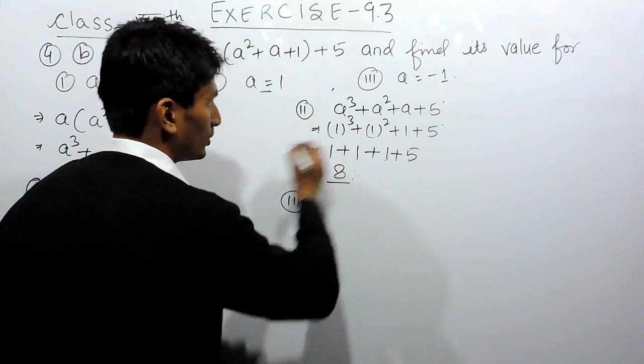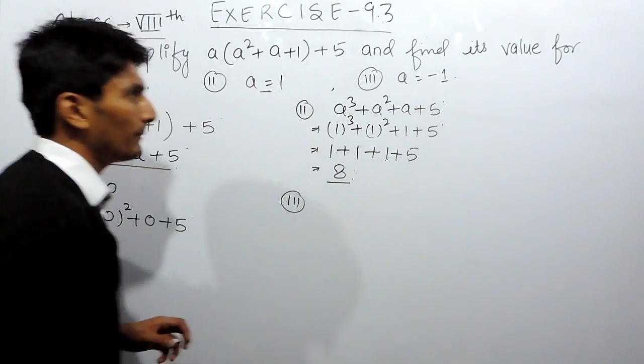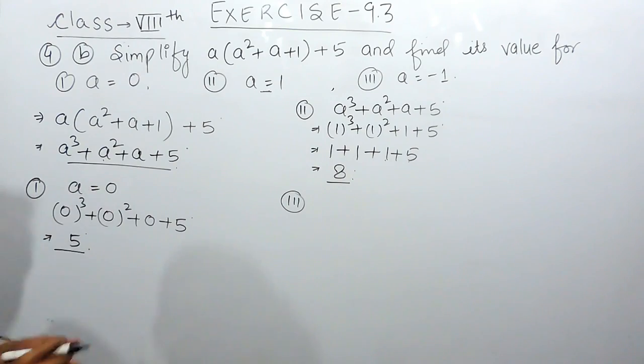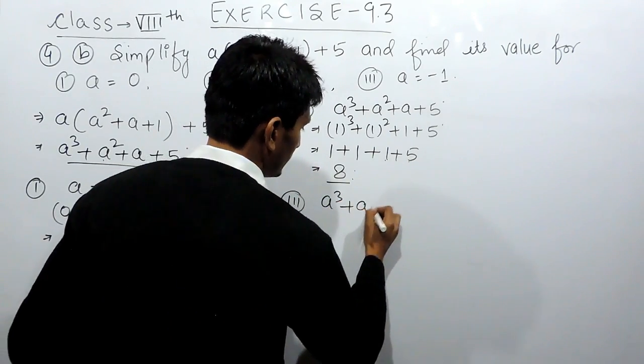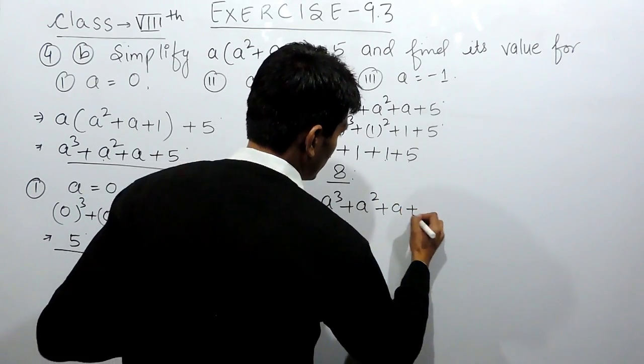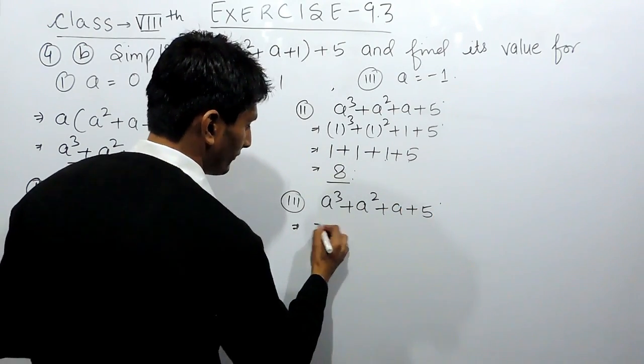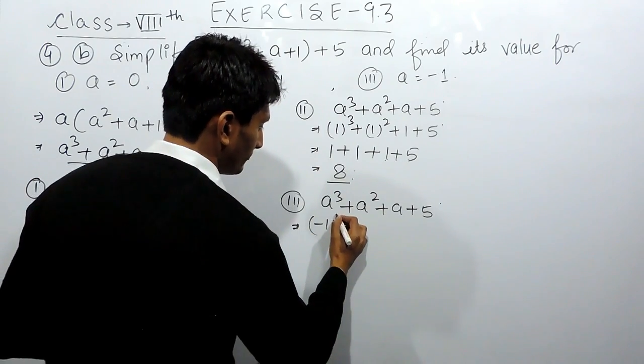Similarly, in the third case, you have to substitute the value of a as minus 1. The expression is a cubed plus a squared plus a plus 5. Here, instead of a, I have to write minus 1.